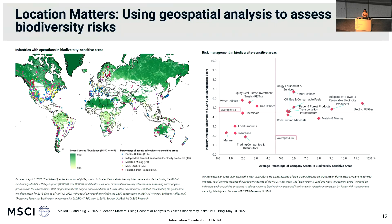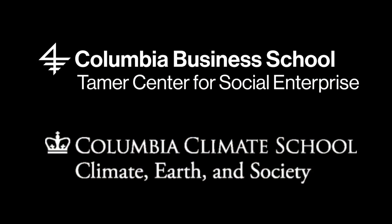To wrap up: our technological capabilities today can vastly improve all types of data used to measure climate-related risks. But despite all the advances in modeling, the quality of the primary base-layer data is still extremely paramount. If your emissions data is wrong, if your bottoms-up data of physical locations is patchy and incomplete, it just doesn't matter how sophisticated the layers are that you put on top of it. I worry quite a lot, because the old adage of garbage in, garbage out still applies in our world. Keep that in mind the next time you're looking at your climate data inputs. Thank you.